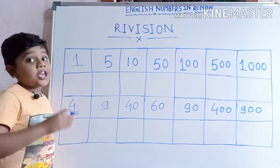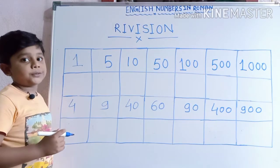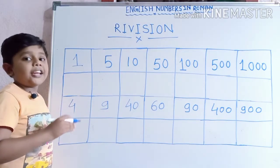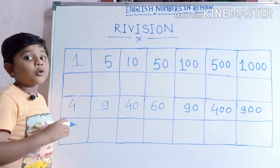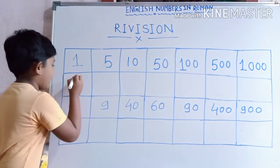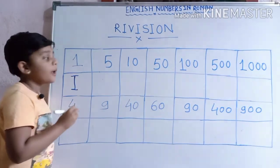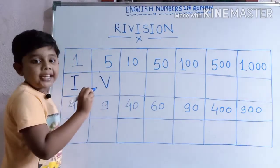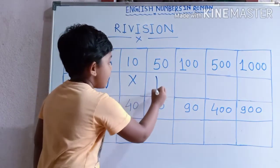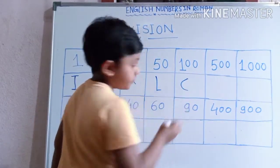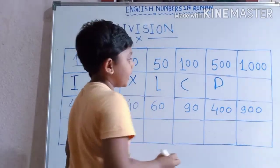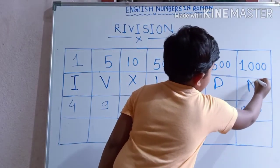Friends, let's revise two important numbers. Using these, you can easily write any number in Roman numerals. 1 = I, 5 = V, 10 = X, 50 = L, 100 = C, 500 = D, 1000 = M.